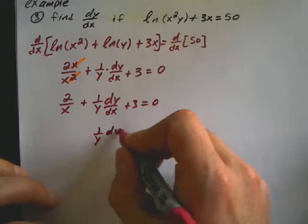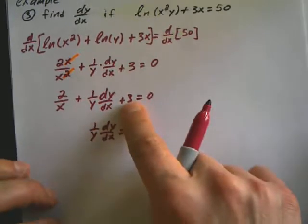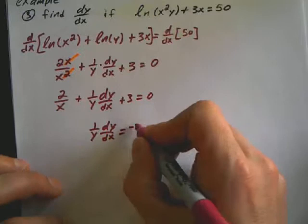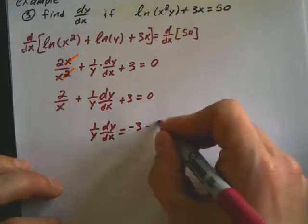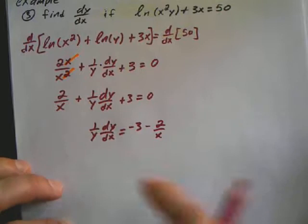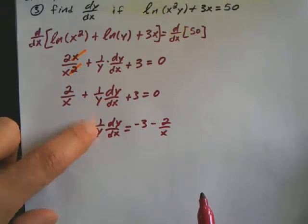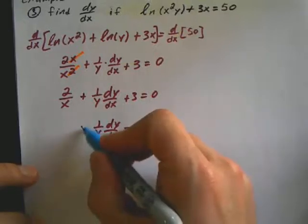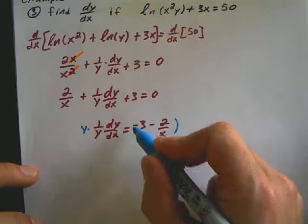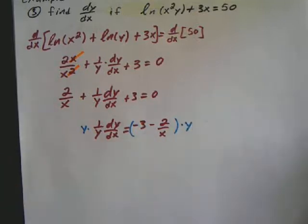So 1 over y dy/dx is equal to, I'm going to make this a positive 3, move it over by making it negative. I'm also going to subtract over 2 over x. And the opposite of 1 over y is going to be multiplying both sides by y. So it's going to be y times this, and y times all of this to reduce.